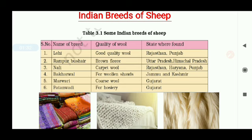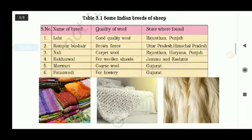The third one is Nali, and their wool is known as carpet wool — they are found in Rajasthan, Haryana, and Punjab. The fourth one is Bhakarwal — their wool is generally used for making shawls and they are found in Jammu and Kashmir. The fifth one is Marwari — their wool is coarse and they are found in Gujarat. The sixth one is Patanwadi — their wool is used for making hosiery items and they are also found in Gujarat.